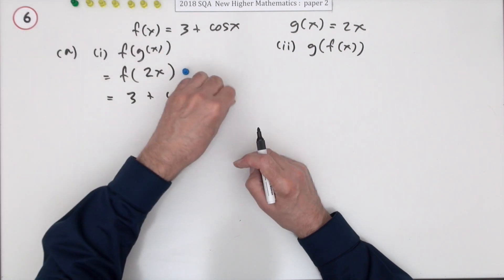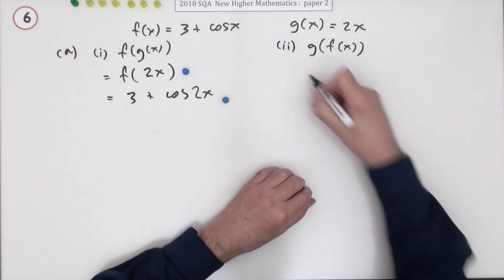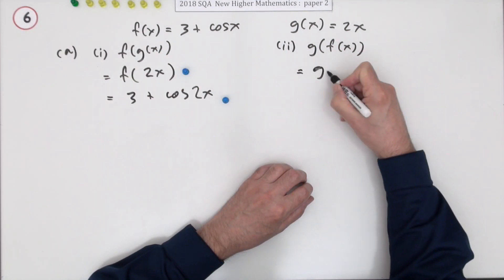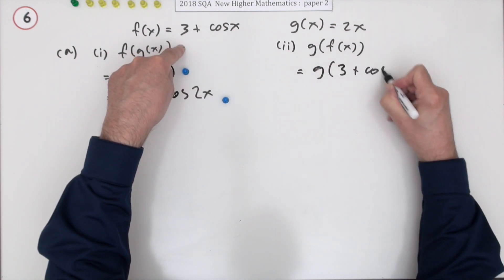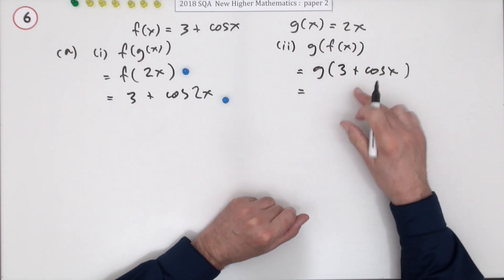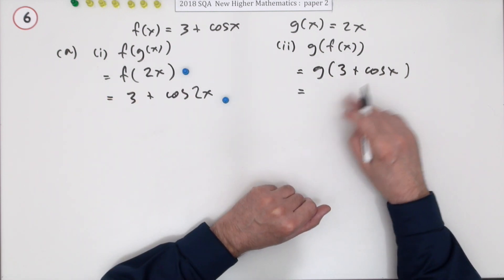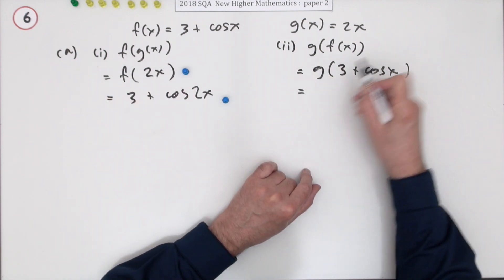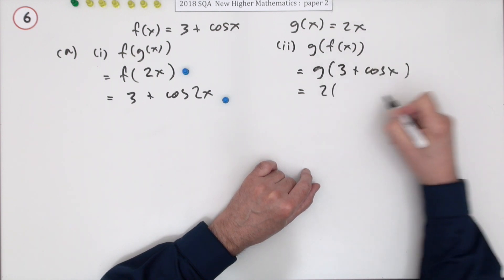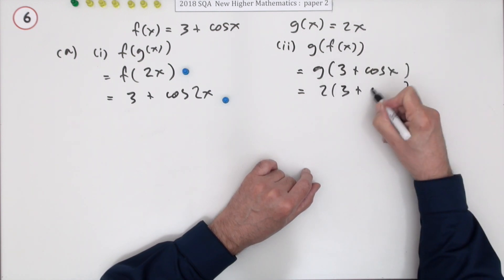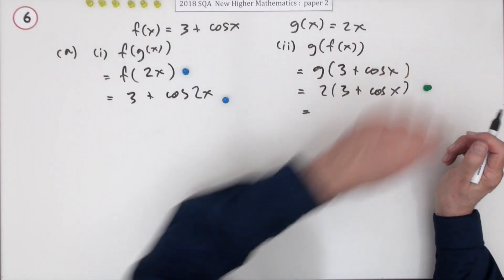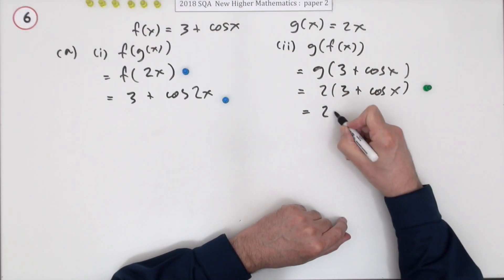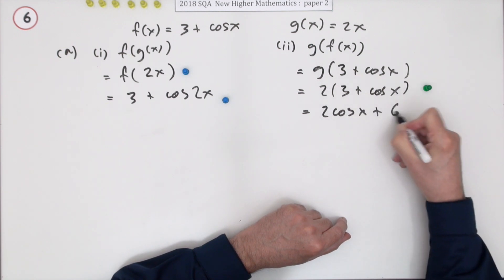Now g of f of x means you're going to feed in f of x, so 3 plus cos x. What does g do to anything you give it? It'll do 2 times whatever you feed it. That on its own is the mark, but I'd probably tidy that up to 2 cos x plus 6.